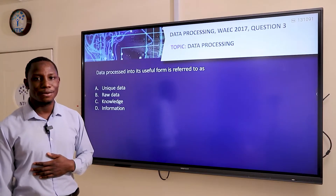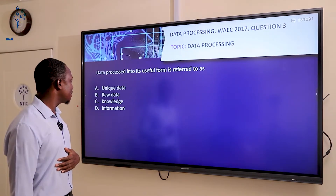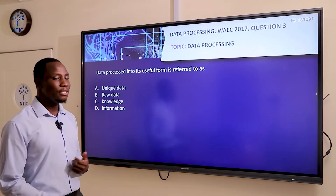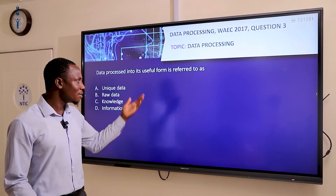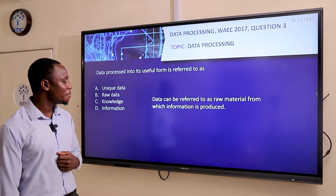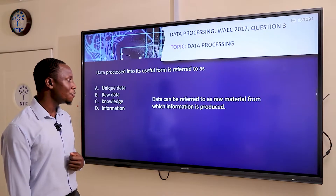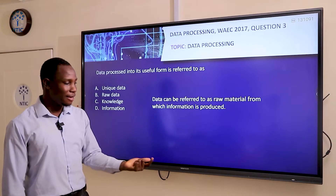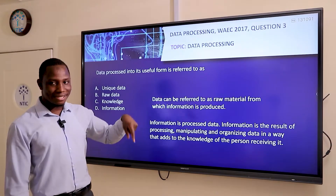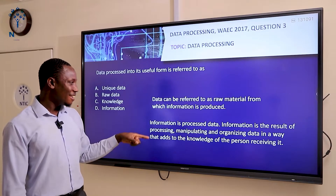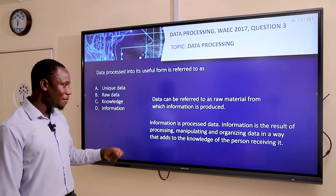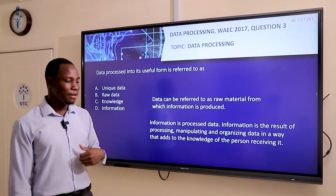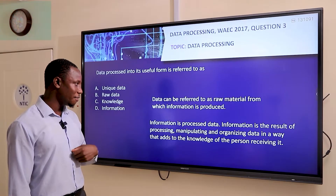Moving to question three. The question says: the data processed into its useful form is referred to as what? Let's look at what data and information are. Data can be referred to as a raw material from which information is produced. When we process data we get information. Information is the result of processing, manipulating, and organizing data in a way that adds to the knowledge of the person receiving it.